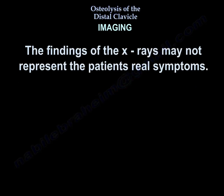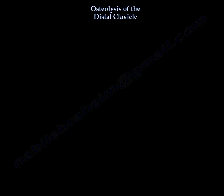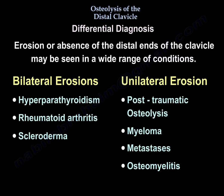The findings on X-ray may not represent the patient's real symptoms. The differential diagnosis of distal clavicle osteolysis includes erosion or absence of the distal end of the clavicle seen in a wide range of conditions. Bilateral erosions can occur in hyperparathyroidism, rheumatoid arthritis, and scleroderma. Unilateral erosions can occur in post-traumatic osteolysis, myeloma, metastasis, and osteomyelitis.